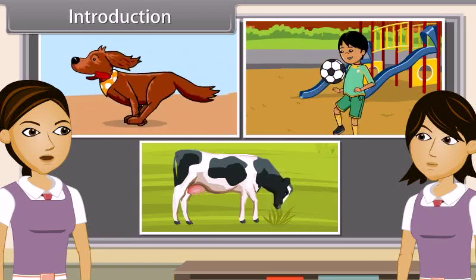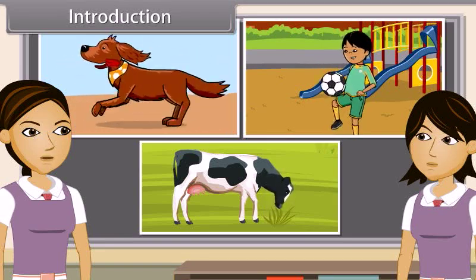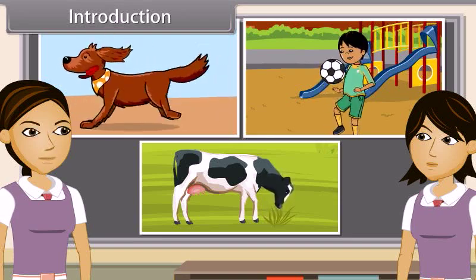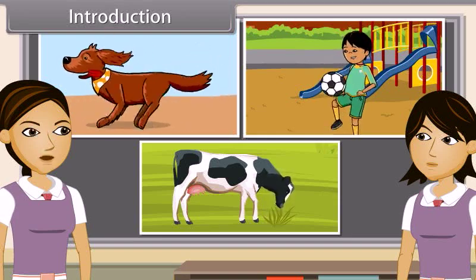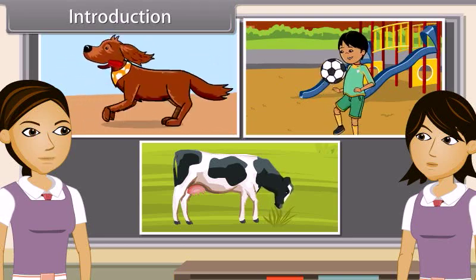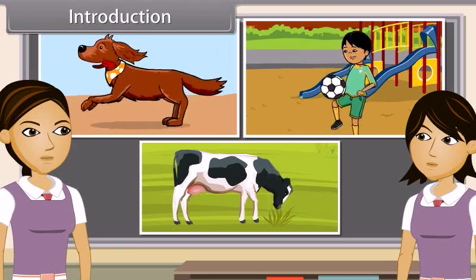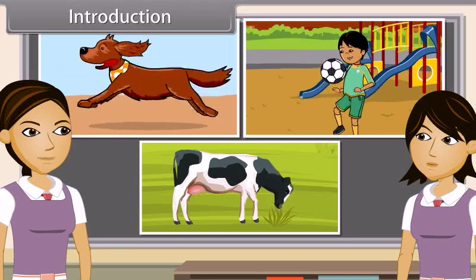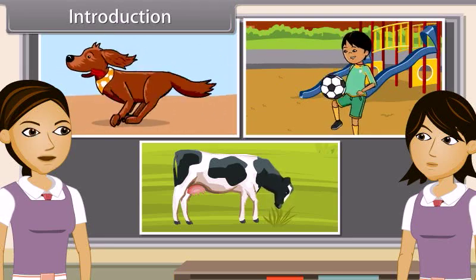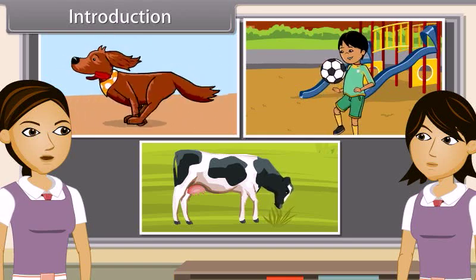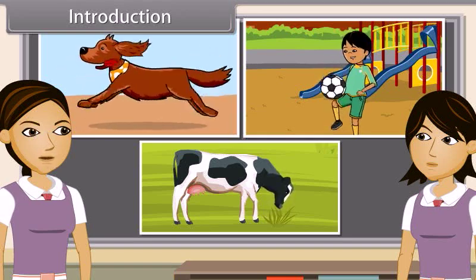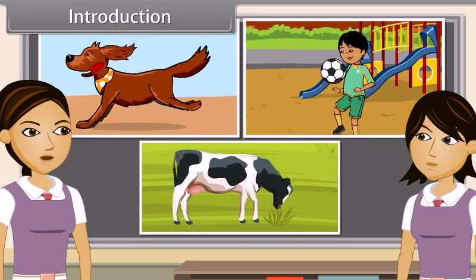If we analyze these movements, we find a reason behind each and every movement. The dog may be running because it has seen a cat. Children play to have pleasure. Cows chew cud to help break up tough food so as to be able to digest it better.